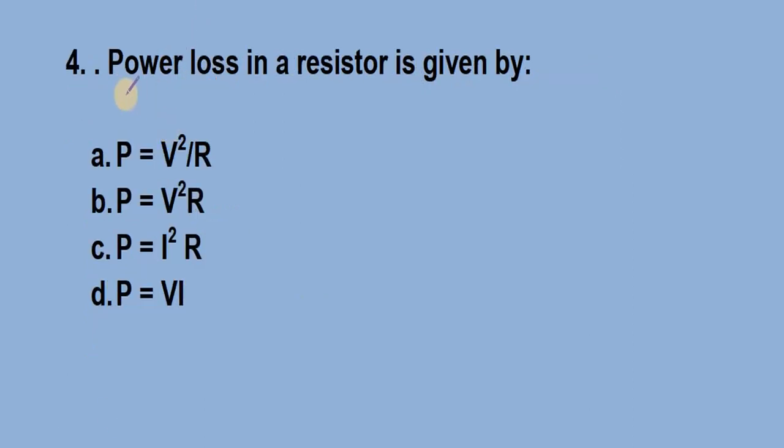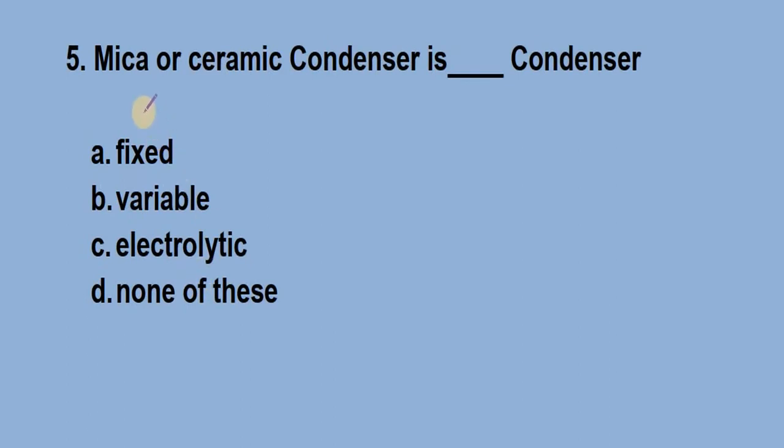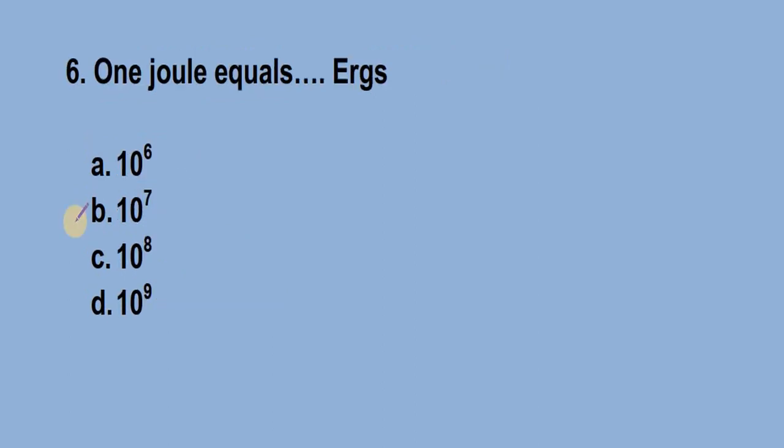Question number 4: Power loss in a resistor is given by? Answer is option A, P equal to V square by R. Question number 5: Mica or ceramic condenser is dash condenser. Answer is option A, fixed condenser. Question number 6: 1 Joule equals dash ergs. Answer is option B, 10 raise to 7 ergs.